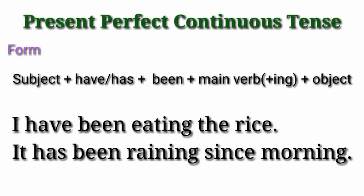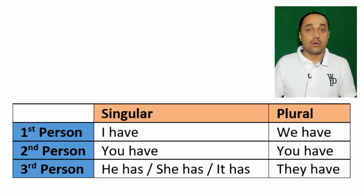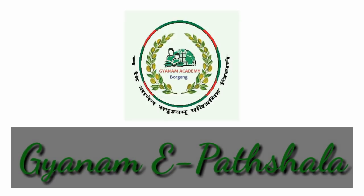For the present perfect continuous tense, for example: 'It has been raining since morning.' This shows an action that started in the past and is still continuing.